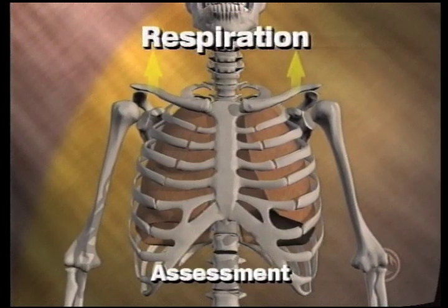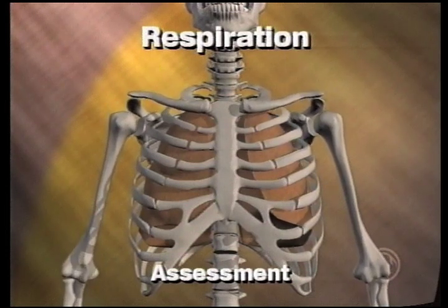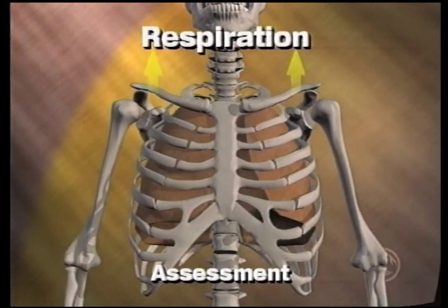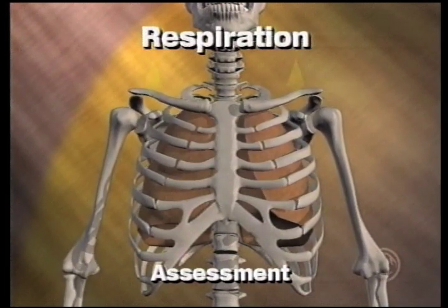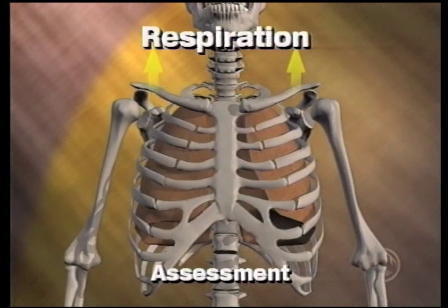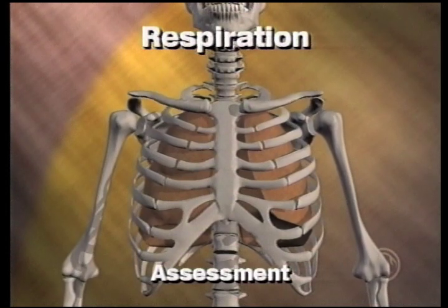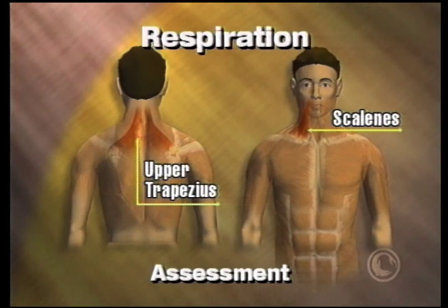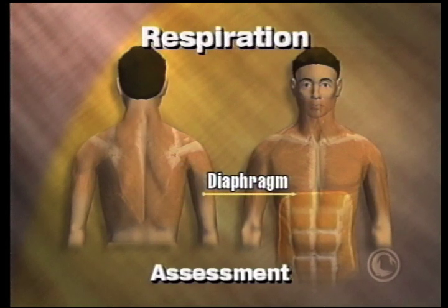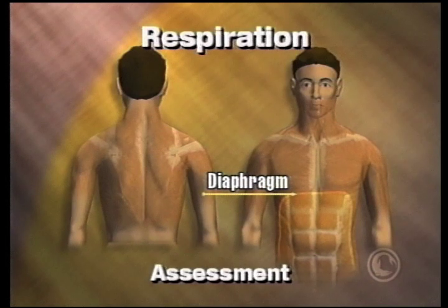Here you can see the number one error with breathing: inhalation where the chest lifts up during inspiration. This occurs by the upper trapezius and scalenes being overactive. The primary muscle of inhalation should be the diaphragm.